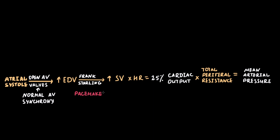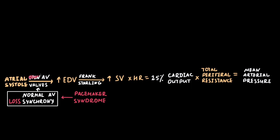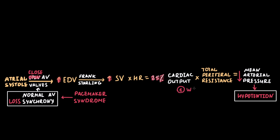Due to pacemaker syndrome, normal AV synchrony is lost and the atrial kick occurs against closed AV valves. This means additional blood volume does not flow to the ventricles. As a result, end-diastolic volume decreases. By the Frank-Starling law, decreasing end-diastolic volume further decreases stroke volume. The decline in stroke volume leads to a decrease in cardiac output of approximately 25%, which in turn decreases mean arterial pressure and causes hypotension. Hypotension leads to weakness, physical activity-related fatigue, and diaphoresis.